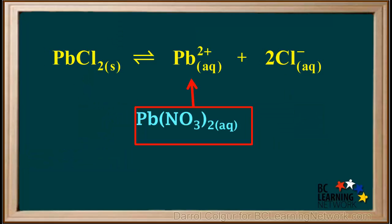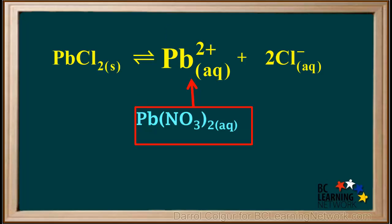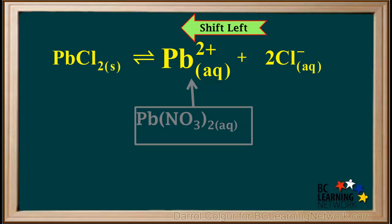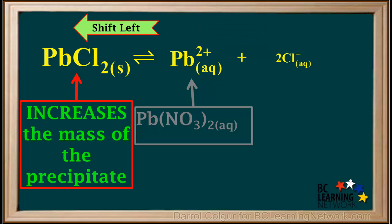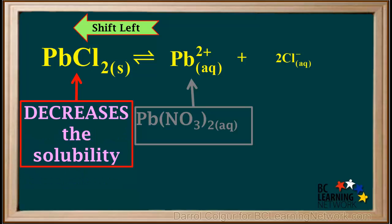We could also add the soluble compound Pb(NO₃)₂. The two solutions contain the Pb²⁺ ion in common. The addition of aqueous lead(II) nitrate will increase the concentration of Pb²⁺ in the saturated solution, which will cause the equilibrium to shift left. The shift left will increase the amount of solid PbCl₂ precipitate, thus decreasing its solubility.